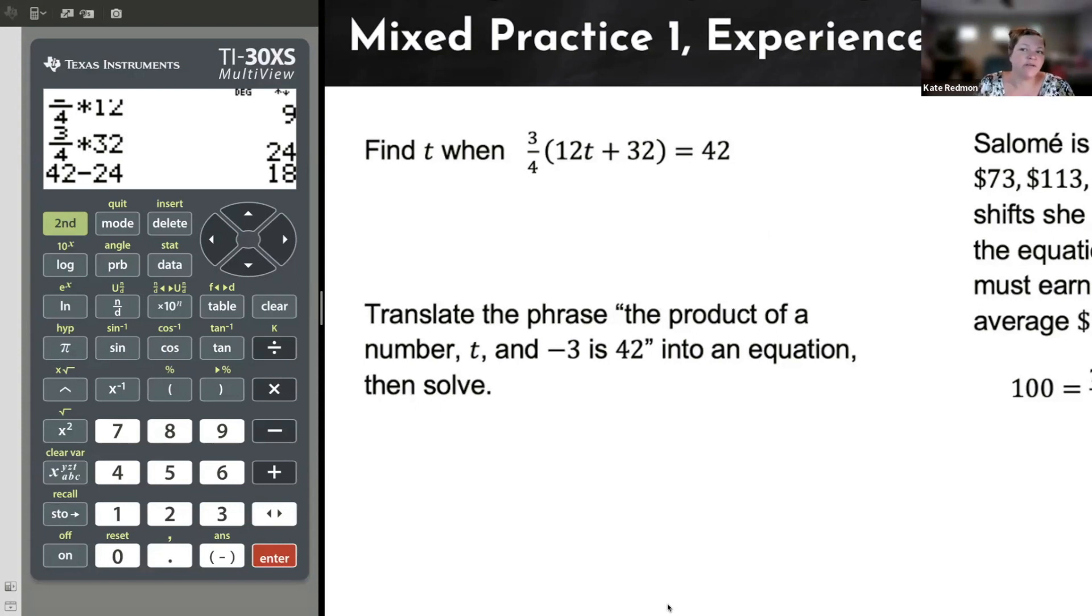Next example, even though it looks harder, it's actually way easier. Whew, wipe your brow. Let's take a look. Translate the phrase, the product of a number t and negative three is 42 into an equation, then solve. I've never actually seen an example just like this on the test, but I thought I'd mix up some skills because I have seen them use the word product a lot. I see translating expressions a lot and I see solving equations with negatives a lot. So we're just going to flex our muscles by testing all three in this example.